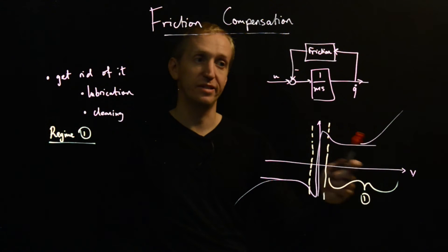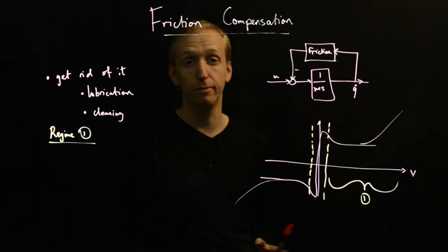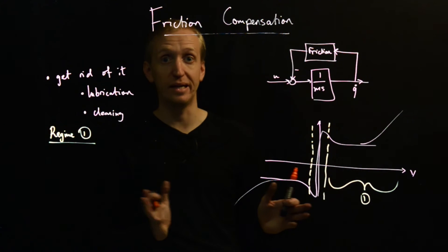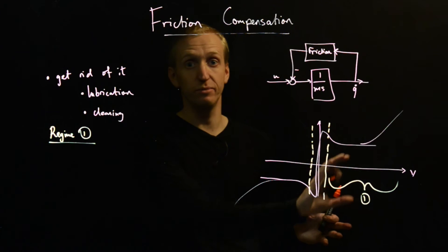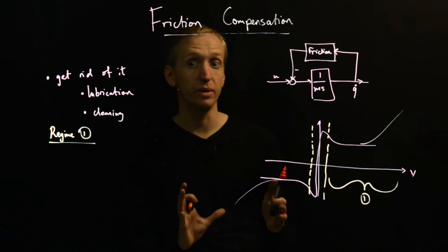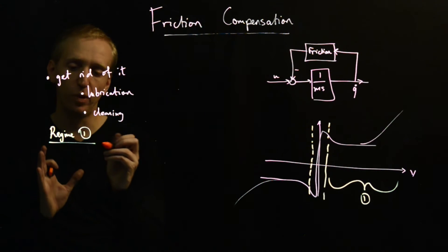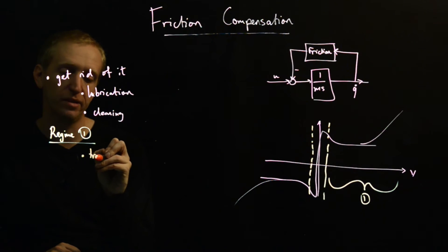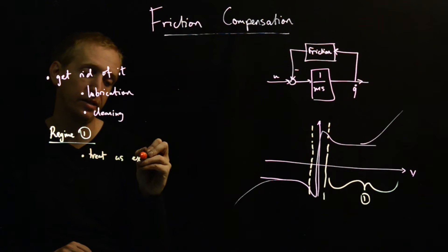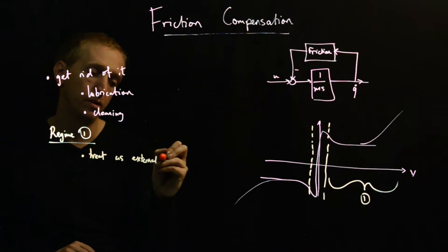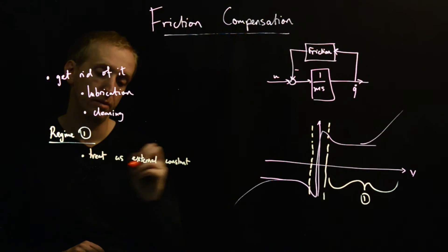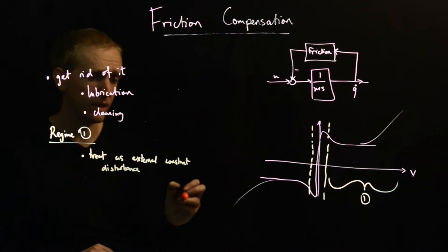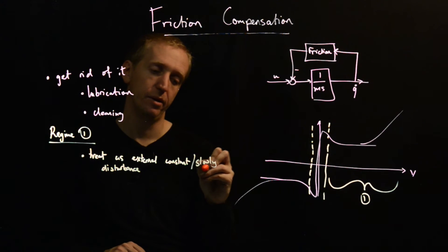Quite a simple way to go about dealing with these types of friction forces to prevent them wrecking your behavior is to treat them as disturbances and design your controllers to eliminate them. When you're in regime 1, maybe a common strategy for dealing with friction is to treat as external constant disturbance, or slowly varying disturbance.